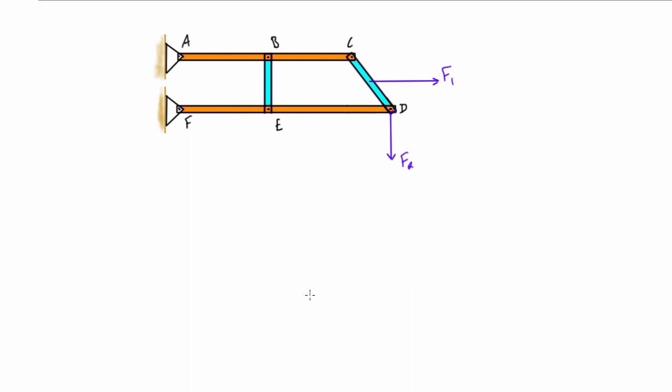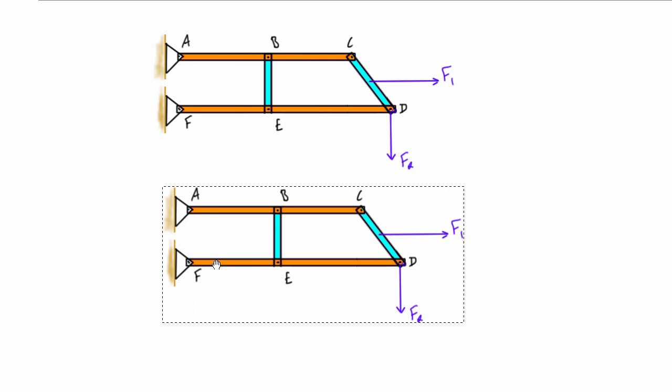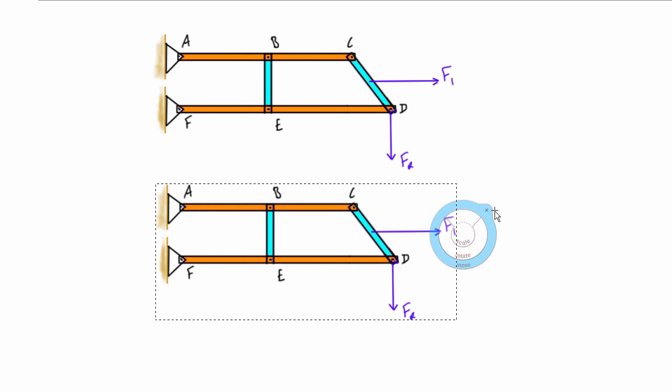So really it's just a two-step process. All we want to do for the first step to solve these problems is we want to draw the free body diagram of the entire object and then solve for as many of the reaction supports as we can.